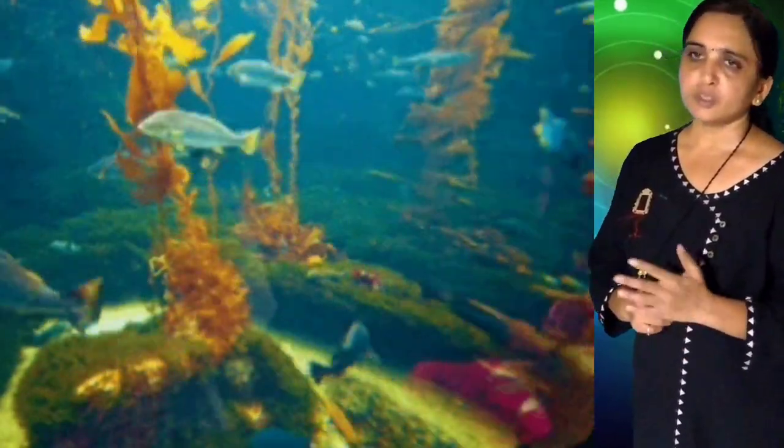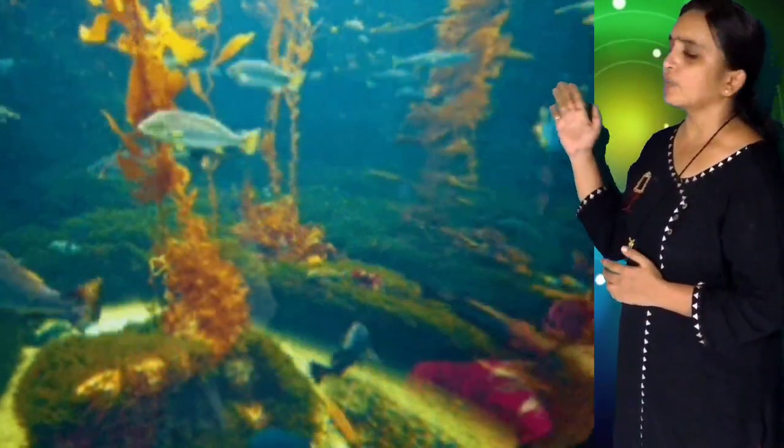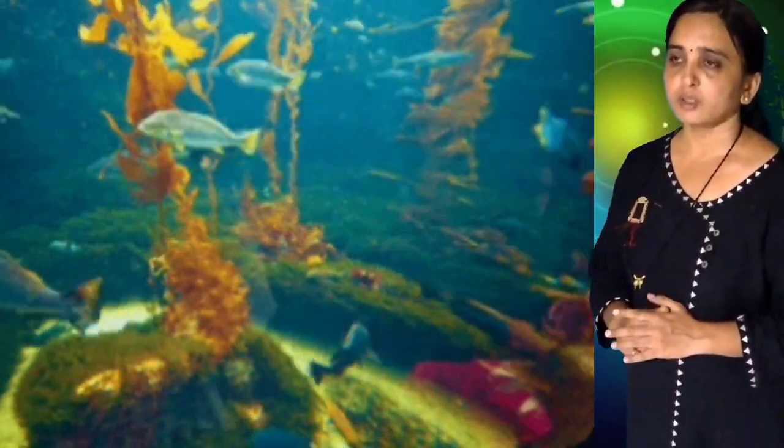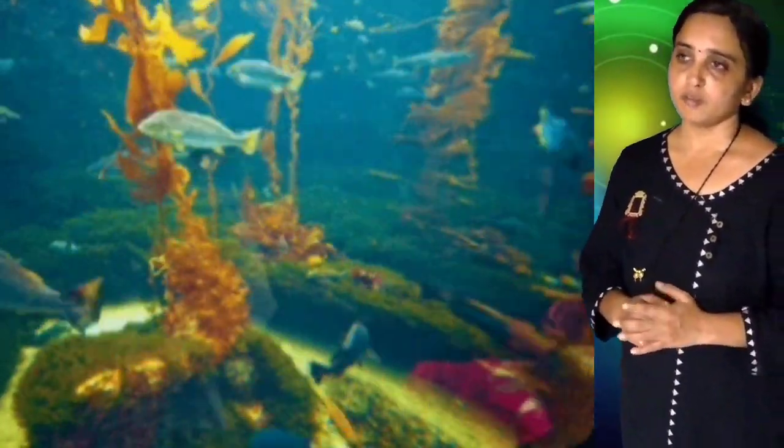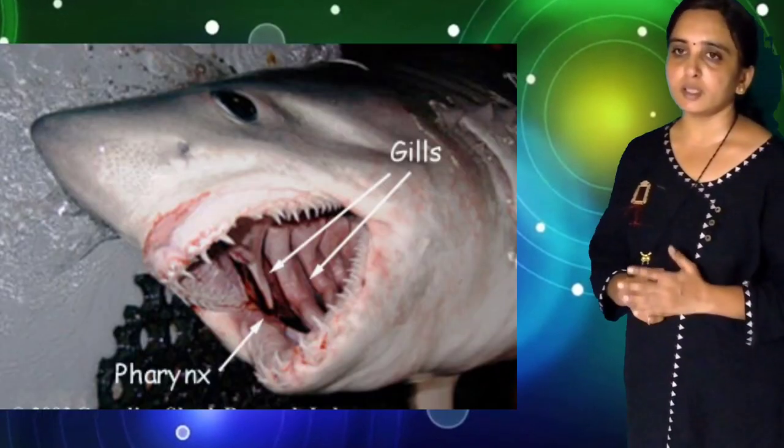In the case of fishes, they are aquatic animals and possess gills for respiration, but their gills are internal gills. In the case of bony fishes, a covering is present on these gills called the operculum. Thus, in fishes, respiration occurs with the help of internal gills.